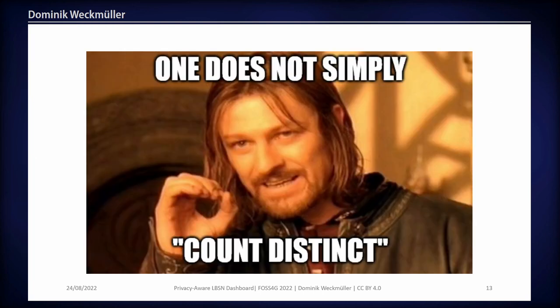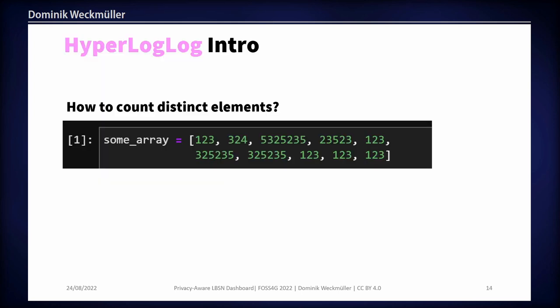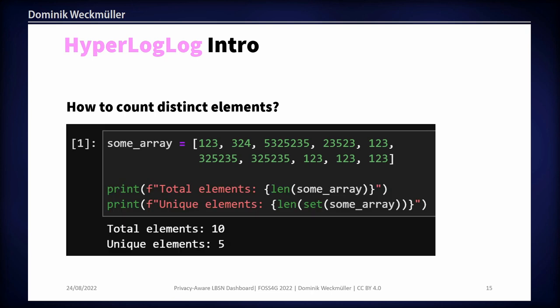Count distinct is actually a very hard thing for your CPU or GPU because of how it works — it's more complicated than it looks. If you have an array with repeating numbers like 1, 2, 3, counting the total length is just 10 — you can literally just query the length. But counting distinct elements is very computational and memory intensive, because you always need to keep in mind the last element you saw and compare it to all the other following elements.